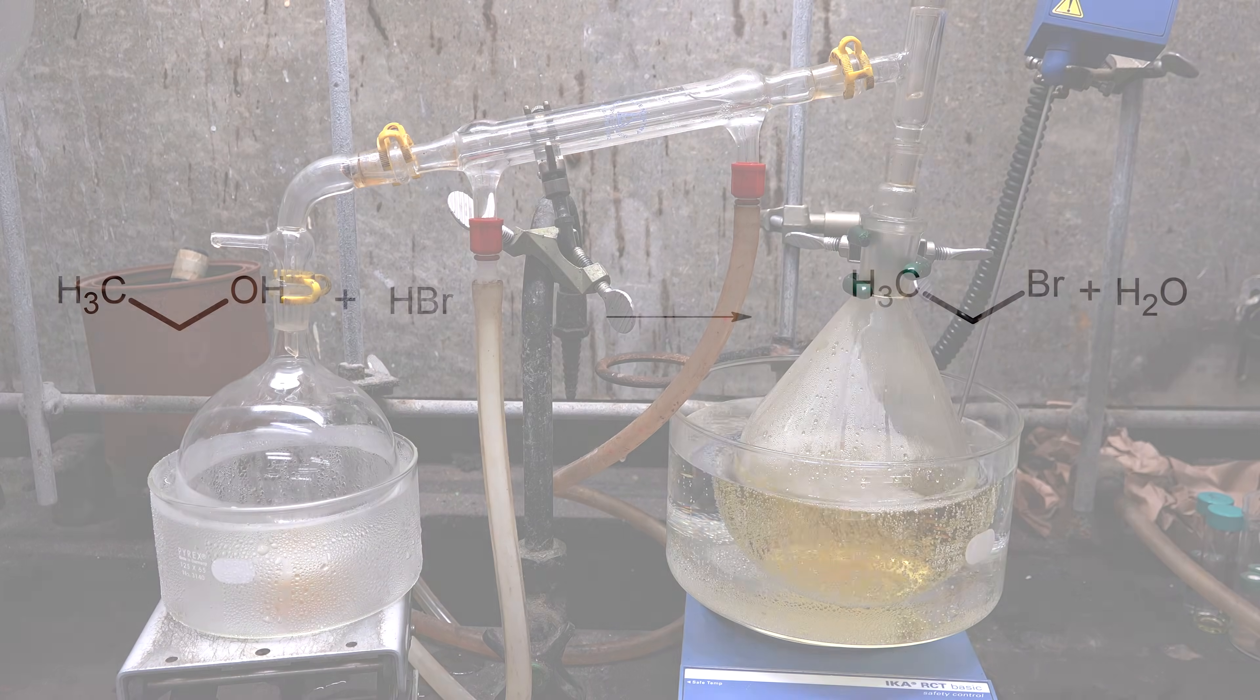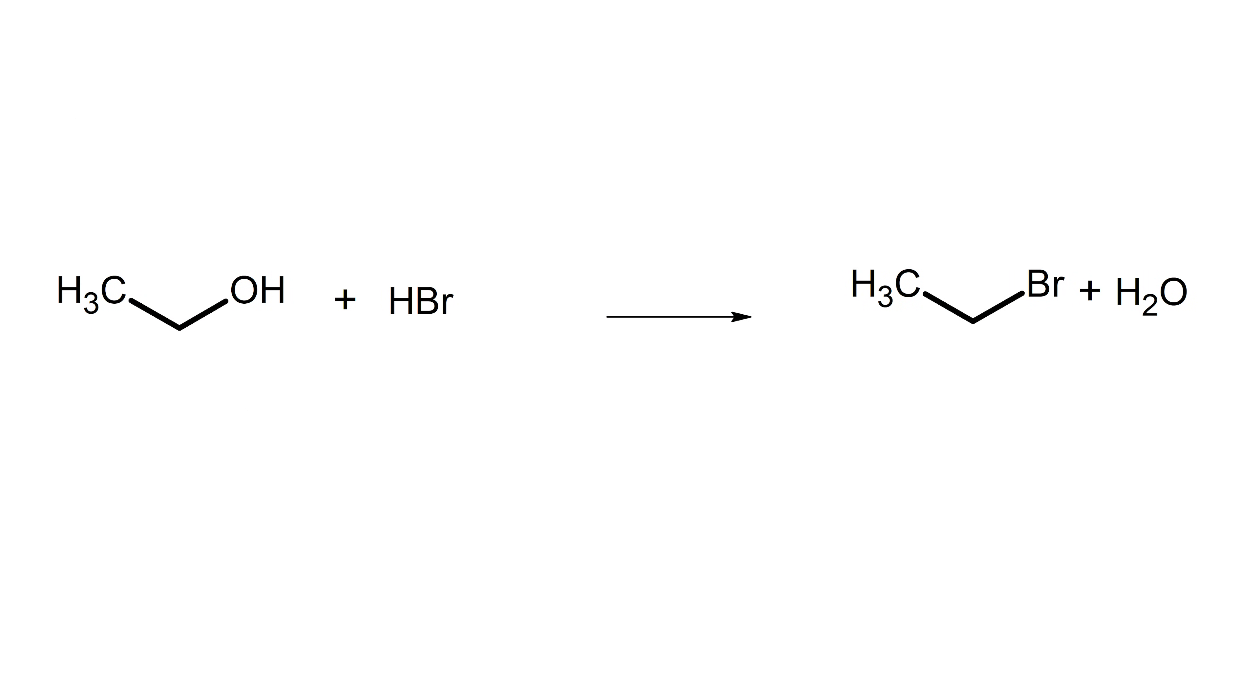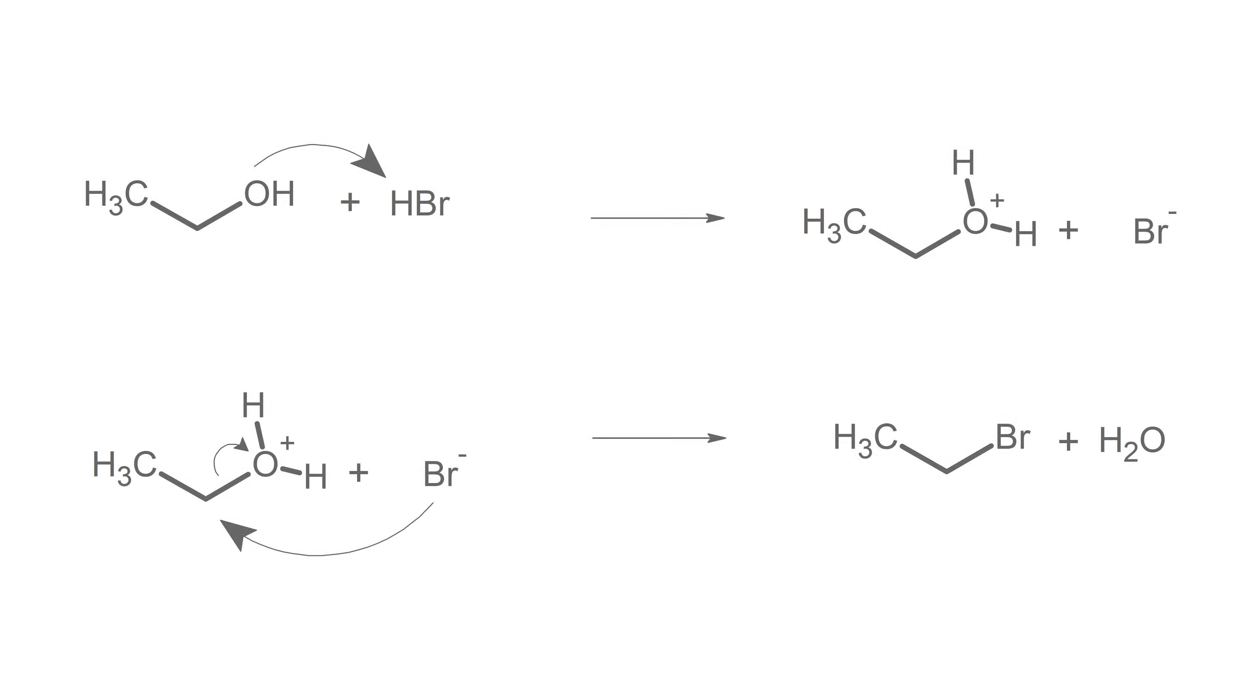So what's happening? The hydrobromic acid reacts with the ethanol to make bromoethane. This is one of the classic SN2 nucleophilic substitution reactions taught in basic organic chemistry courses. The alcohol group gets protonated by the highly acidic conditions of being in a mixture of hydrobromic and sulfuric acids. This makes it an exceptionally good leaving group and highly susceptible to a nucleophilic attack. The bromide ions in solution then attack the carbon and this pops off the water. In the end we get bromoethane and water.